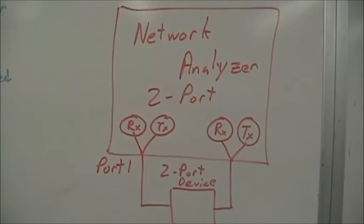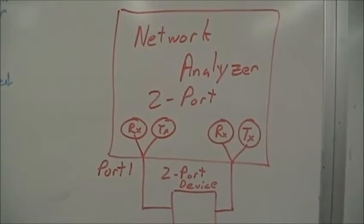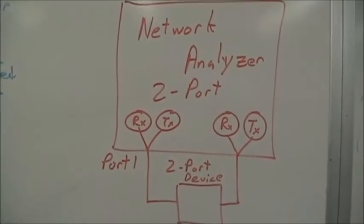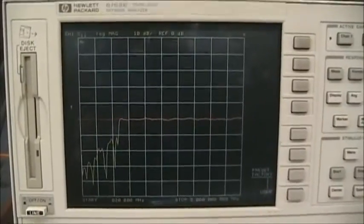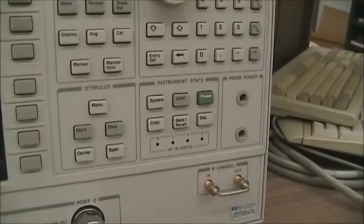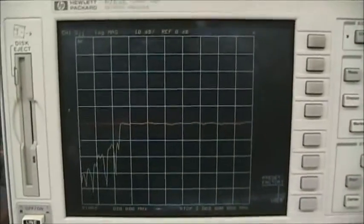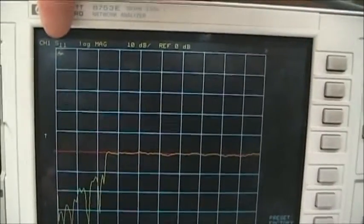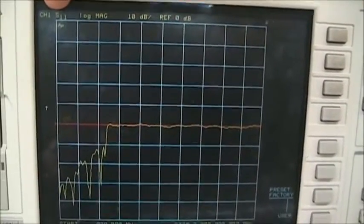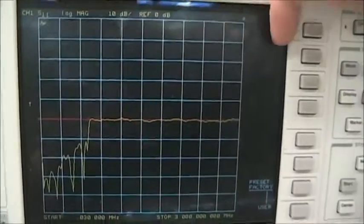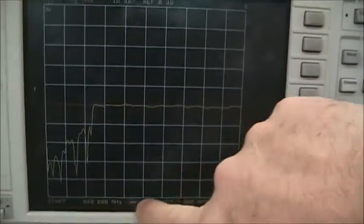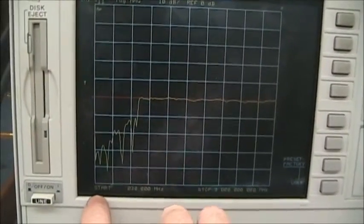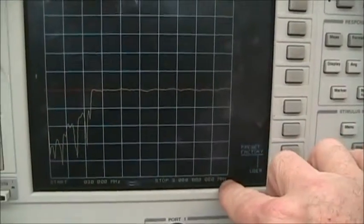Because there are two ports active, we must account for the interaction between the two ports in the calibration process. Upon starting the network analyzer or pushing the green preset button, we have the familiar display of S11, the input port parameter, reflection coefficient, and the frequency range from 30 kHz to 3 GHz.